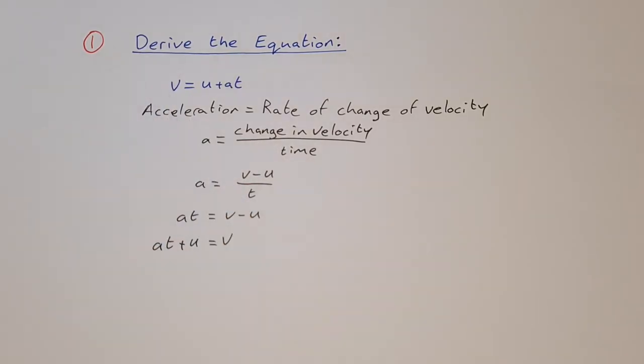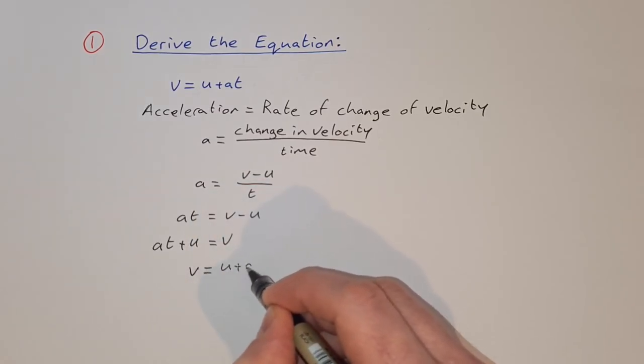And then to get it into the form that we were given at the start, just rearrange the sides. v is equal to u plus a t.